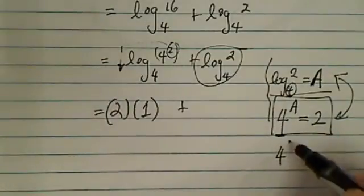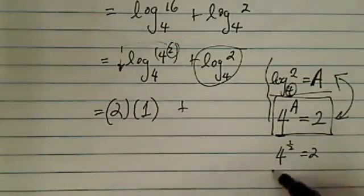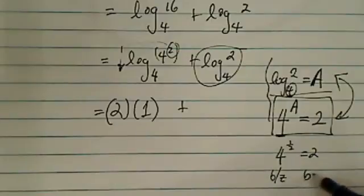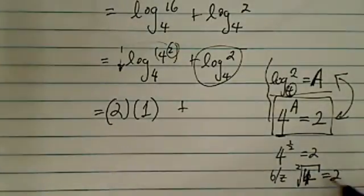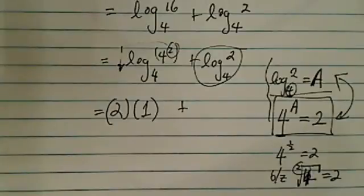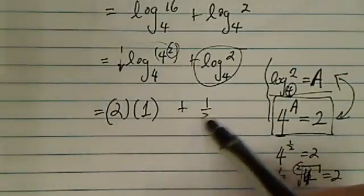From here, you can see 4 to the half is equal to, because radical 4 is equal to 2. And this one is really 4 to the half. So this chunk is equal to half.